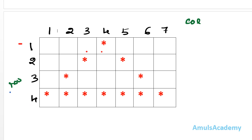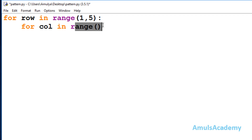Looking at the output, when row is 4 we want 7 columns. So the number of columns needed is 7 — that is 1 through 7. So here I need to mention the range as 1 to 8, because 8 is excluded, so this function will give output as 1 through 7.